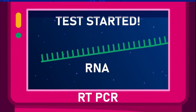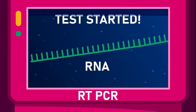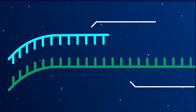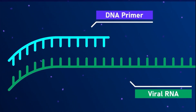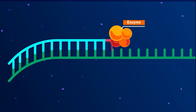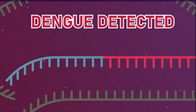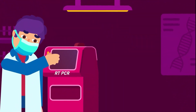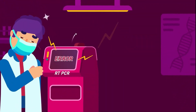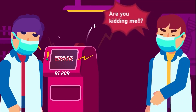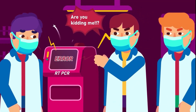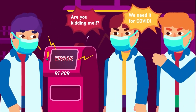Another virological method is reverse transcriptase polymerase chain reaction, or RT-PCR, which multiplies the viral RNA using enzymes over several cycles until it can be detected. In general, these tests are sensitive, but they require specialized equipment and technical training, which might not always be available in all medical facilities.